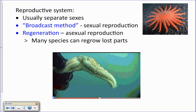Reproductive system: they tend to have separate sexes — male and female sea stars. They use broadcast reproduction: males release sperm into the water, females release eggs, and fertilization occurs outside the animal's body in the water column — external fertilization. This forms a larva which eventually grows into an adult starfish. So they can reproduce sexually through broadcast spawning.